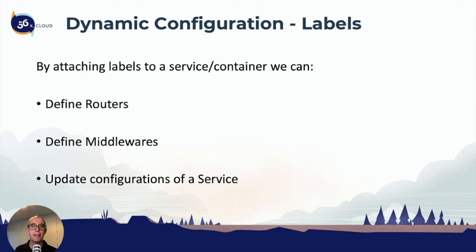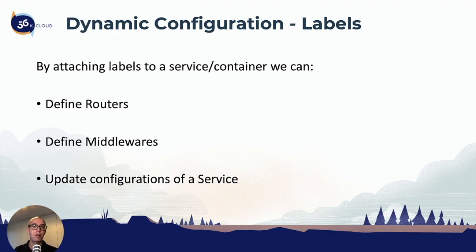By attaching a label to a service or container we can define routers, as we've seen in a previous lab. We can also define middlewares, which we'll get into in a future chapter. We can update configurations of a service — for example, in the previous lab we enabled port 5000, all done through labels directly on the service.